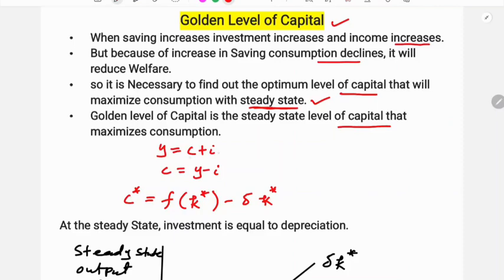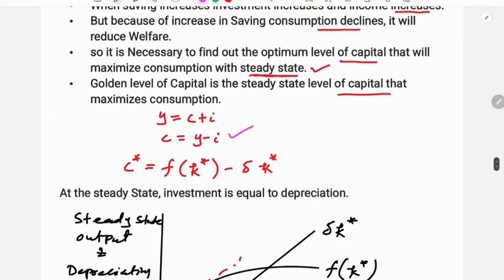The equation is: small y equals small c plus i, where small y is output per capita, c is consumption per capita, and i is investment per capita. So c equals y minus i. Output per capita is a function of the capital-labor ratio. At the level of steady state, investment is equal to depreciation.